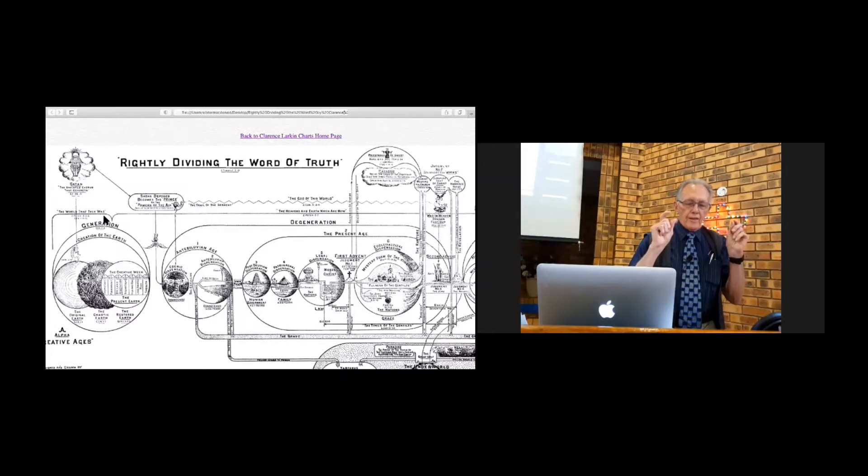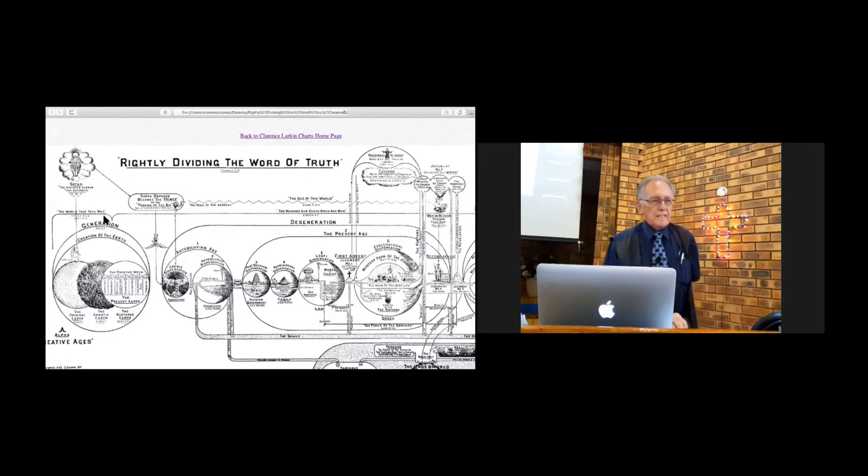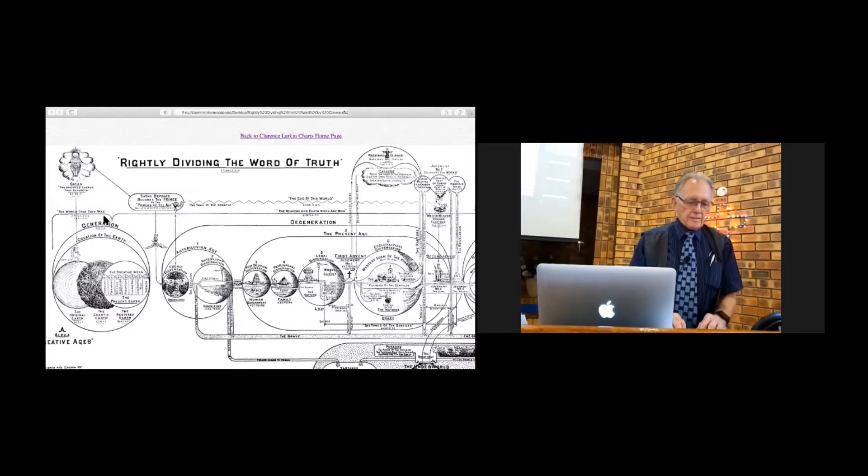Thy people, thy holy city. Daniel 9 verse 24: 70 weeks are determined upon thy people and upon thy holy city to finish the transgression, and to make an end of sins, and to make reconciliation for iniquity, and to bring in everlasting righteousness, and to seal up the vision and prophecy, and to anoint the most holy.